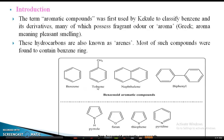This is the benzenoid aromatic compound. This is the aromatic compound. Aromatic compounds show unsaturation — unsaturation means double or triple bonds. Despite unsaturation, aromatic compounds undergo substitution reactions, not addition reactions.